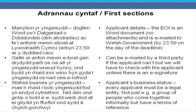The expression of interest is a Word document with no attachments, emailed to the Welsh Government by 23:59 on the day of the deadline. It can be emailed by a third party, but we will need to check with the applicant unless there's an e-signature. Every applicant must be a legal entity — for example, a registered co-operative, a charity or a company. A group of people with a terms of reference but no legal structure wouldn't be eligible.